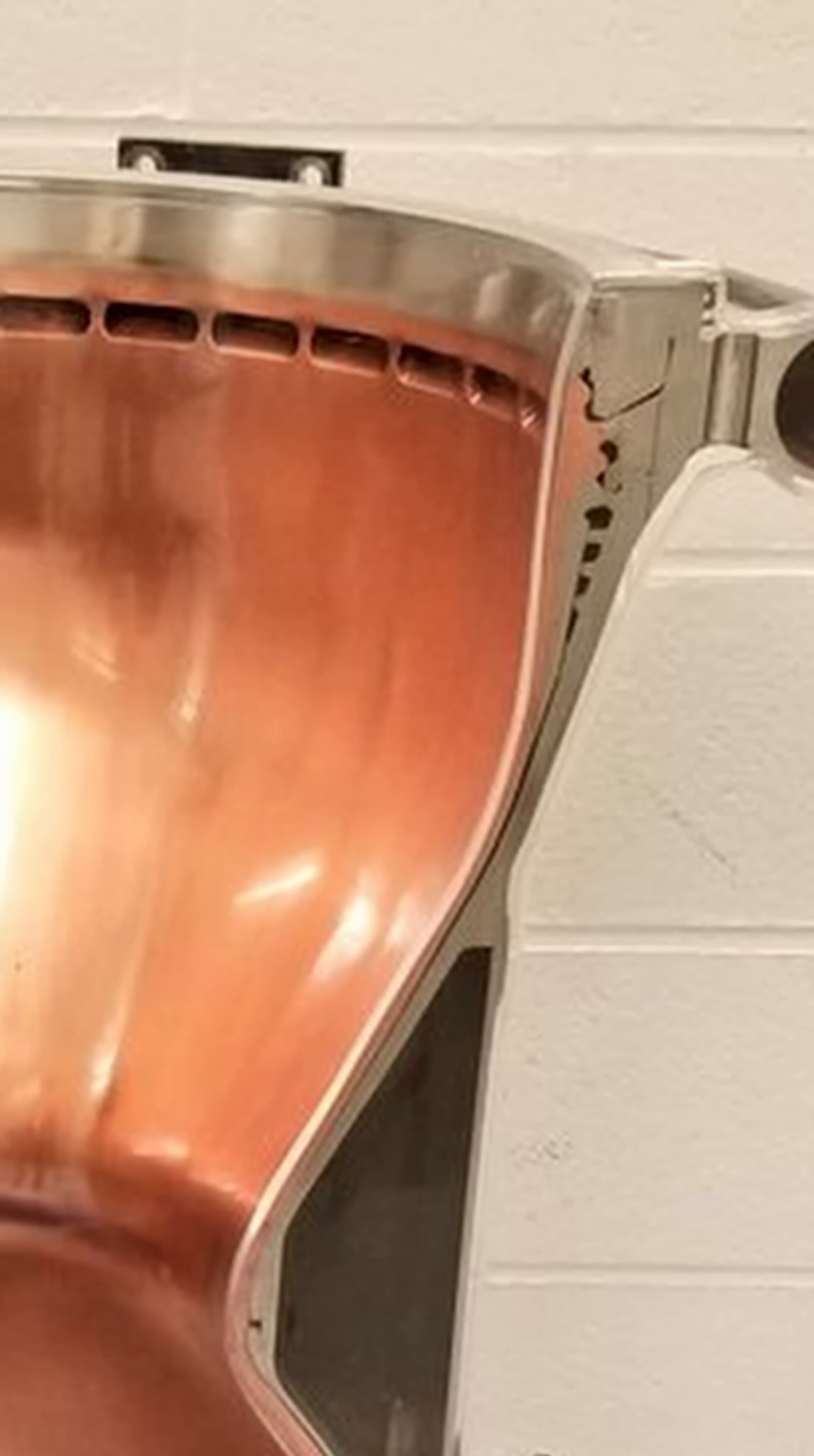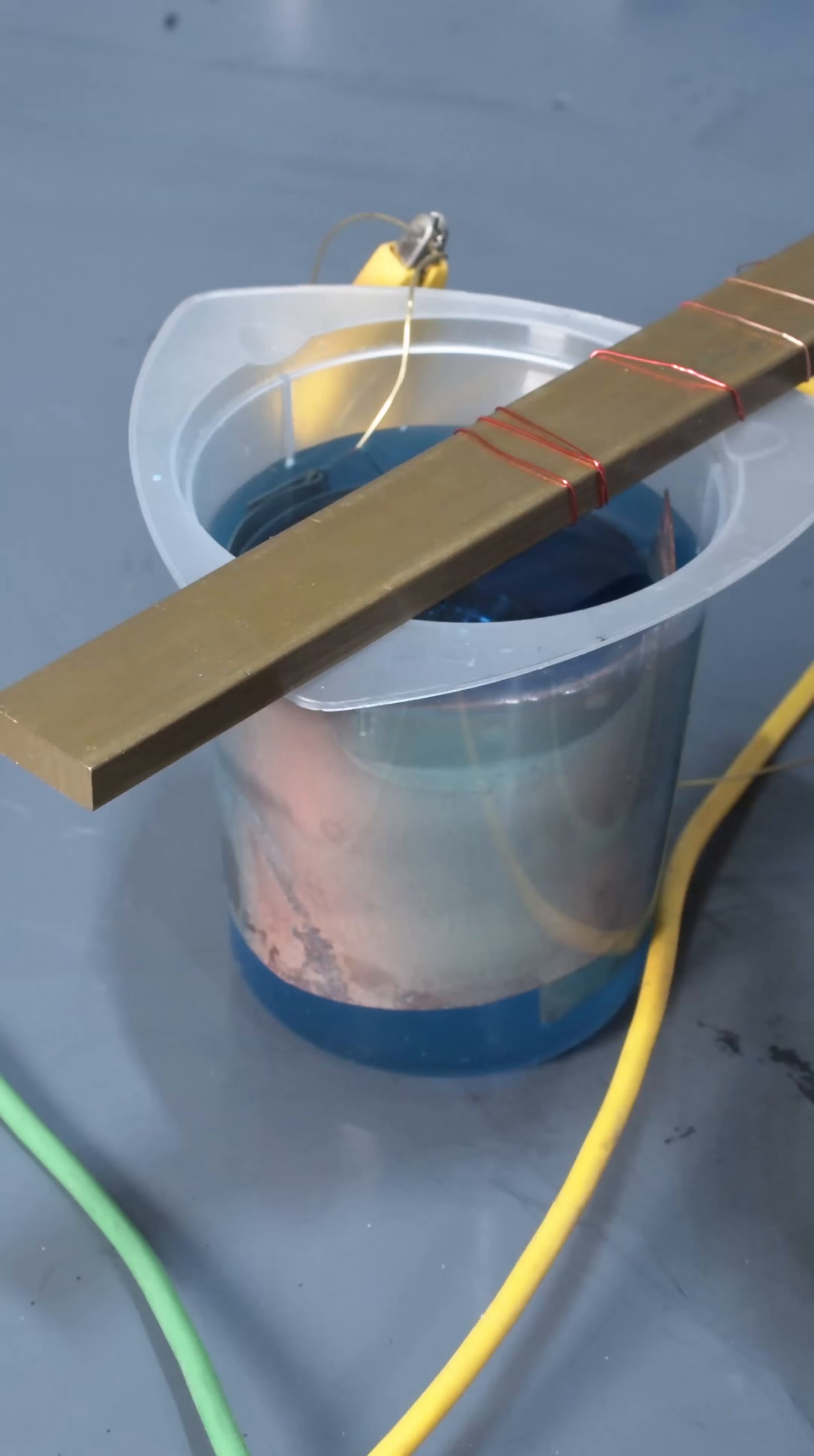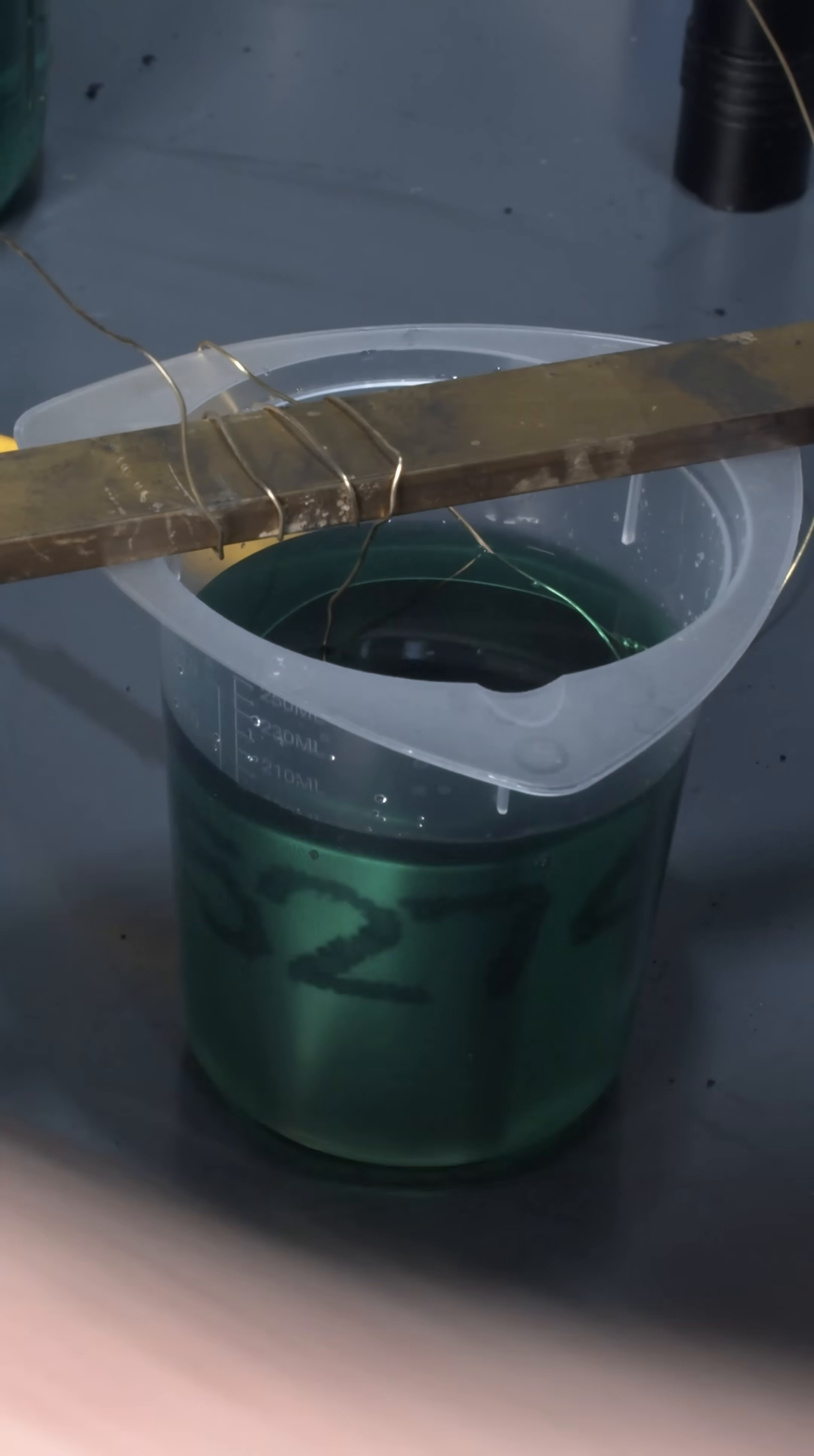The next step is to create the outer jacket using electroplating. So I dropped my model into a copper electroplating bath. I let this plate for a couple hours and put it in the nickel electroplating bath next.